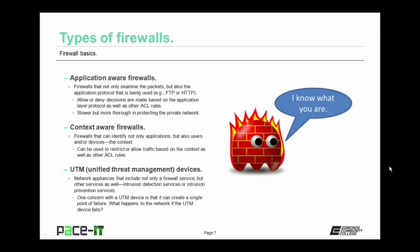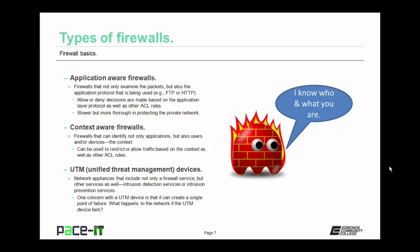There are application aware firewalls. These are firewalls that not only examine the packets but also the application protocol being used — so it knows if it's FTP or HTTP. Application aware firewalls make allow or deny decisions based on the application layer protocol as well as other ACL rules. They are slower but more thorough in protecting the network. There are also context aware firewalls — firewalls that can identify not only applications, but also users and devices. Context aware firewalls can be used to restrict or allow traffic based on the context as well as other ACL rules.